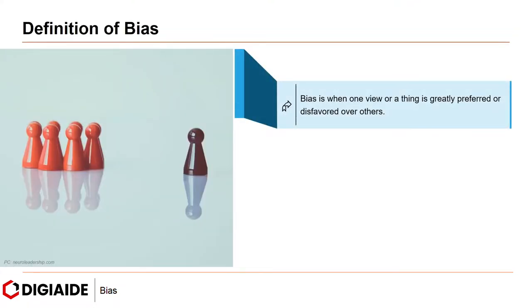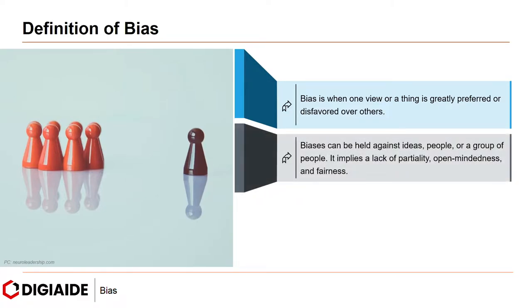Bias is when one view or a thing is greatly preferred or disfavored over others. Biases can be held against ideas, people, or a group of people. It implies a lack of partiality, open-mindedness, and fairness.